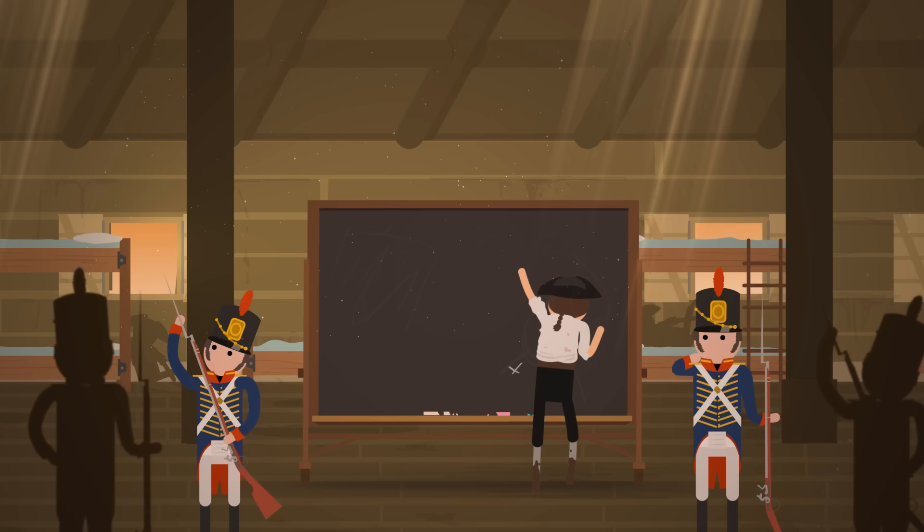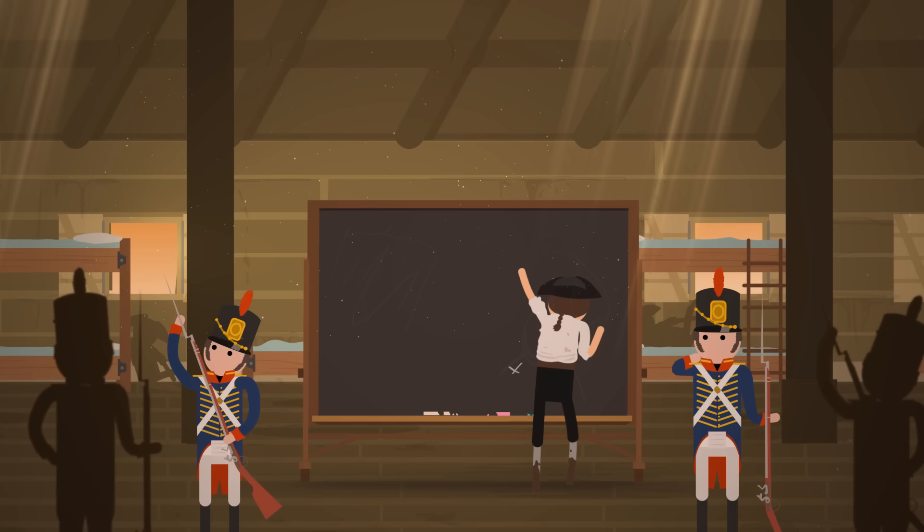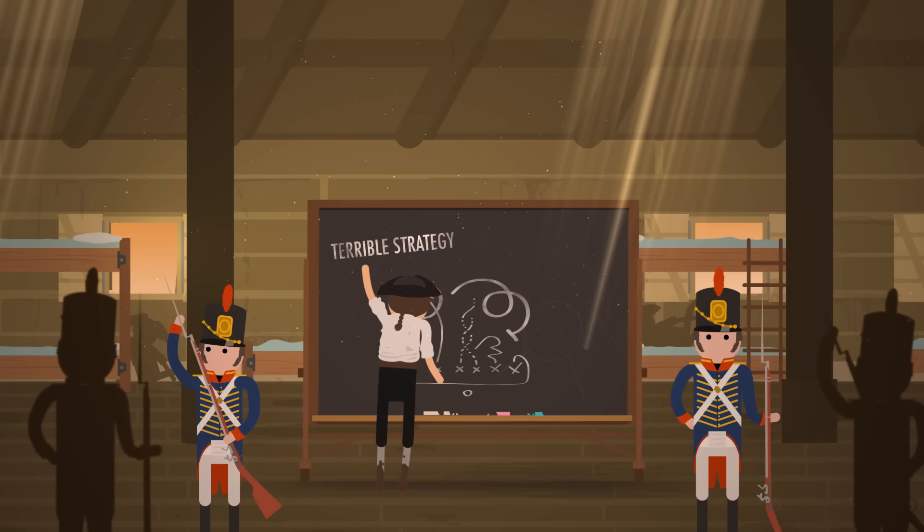America's lack of success in Canada was primarily attributable to terrible strategy. They might have succeeded if they'd taken Montreal, but they didn't want to march through northern New York because it was full of Federalists who were opposed to the war. Instead, they concentrated on the West, that is, the area around Detroit, where fighting went back and forth.